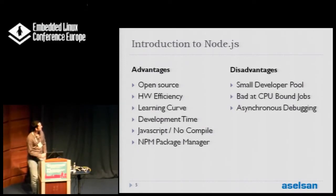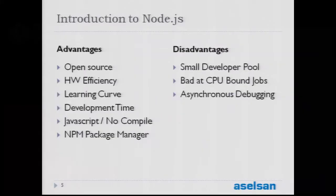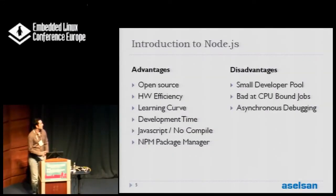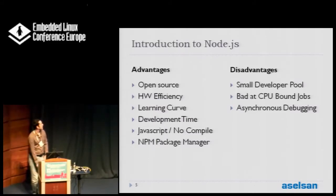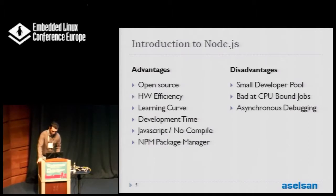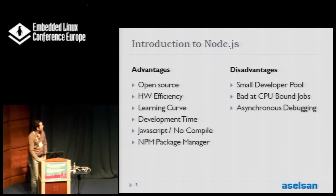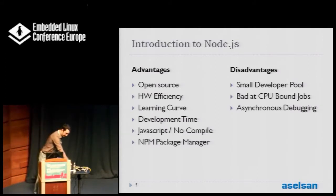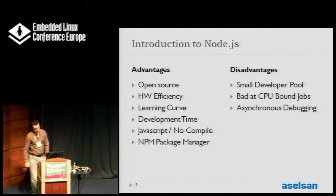Looking at the disadvantages: it's a new framework so it has a small developer pool — it can be hard to find local expert developers, but it's an active and growing community with good community support. It's also bad at CPU-bound tasks; when you do CPU-intensive coding you block the entire event queue, and blocking I/O also blocks the event queue. So you should be very careful programming with the asynchronous model in mind. Finally, asynchronous debugging is hard compared to synchronous debugging, and it's hard to trace memory and find memory leaks.